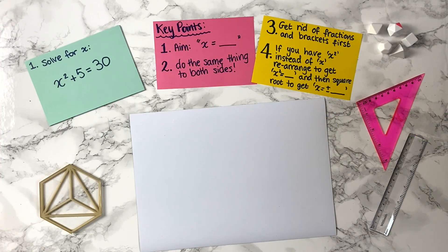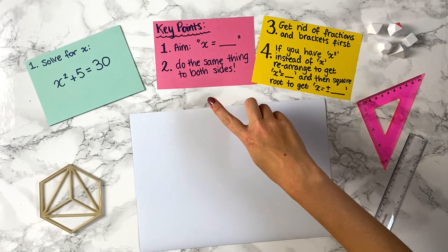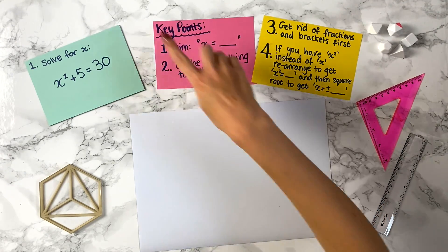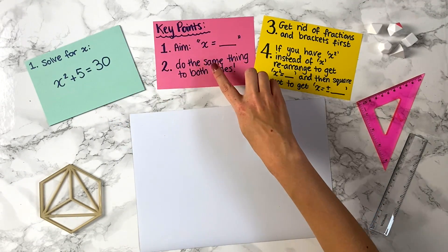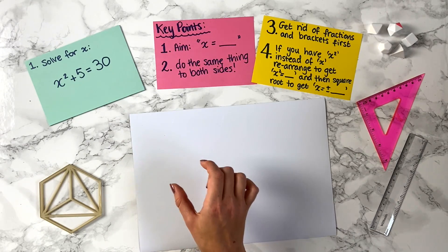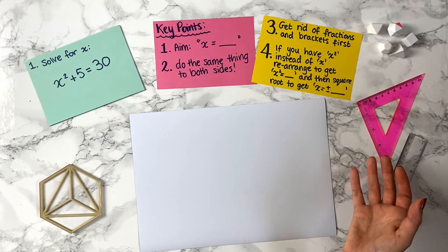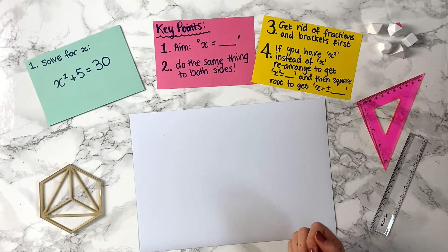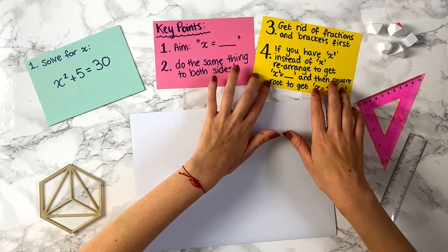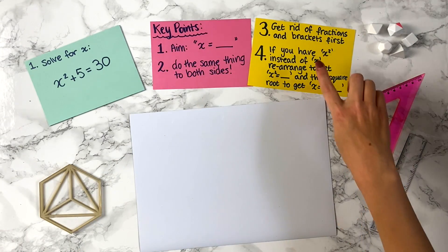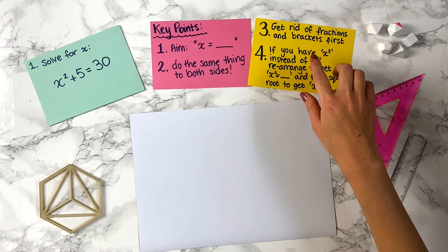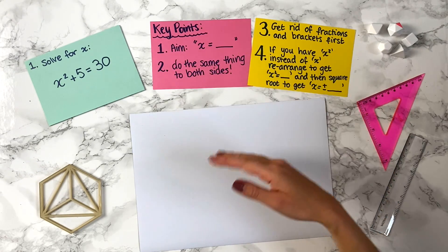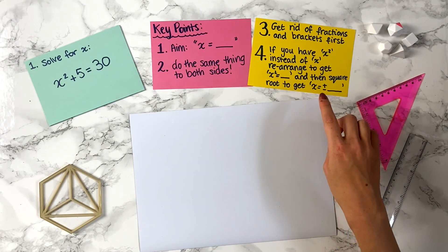Let's now have a look at some harder examples of solving equations. The same key points that we needed before still apply — when solving for x, our aim is to get x on its own on one side of the equal sign, and if we do something to one side we have to do it to the other side. With these harder questions, it can make things easier if there are fractions or brackets to get rid of the fractions and then get rid of the brackets before you do anything else.